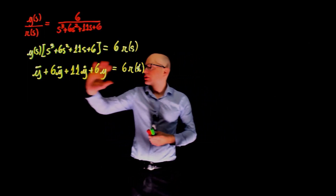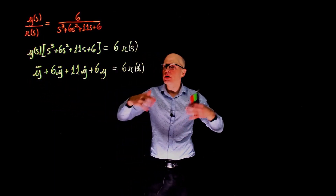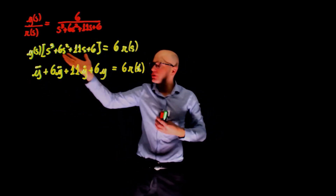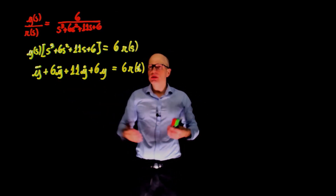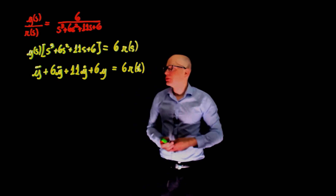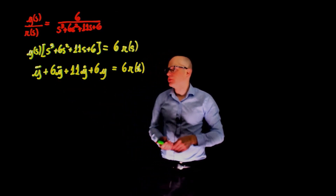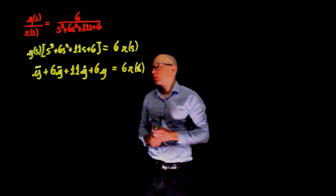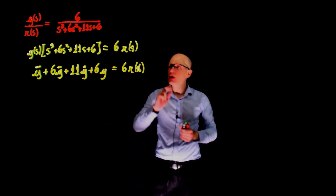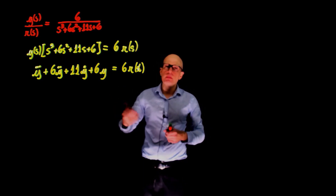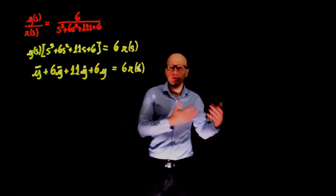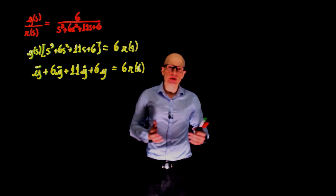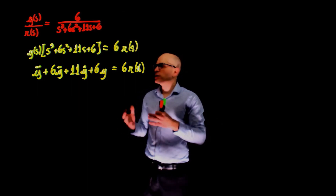So this is now our differential equation in the temporal domain, obtained from the transfer function. We can now define the state variables for this representation. This is a third-order differential equation, so we are going to need three state variables to describe it as three first-order differential equations. There are multiple choices for the state variables.